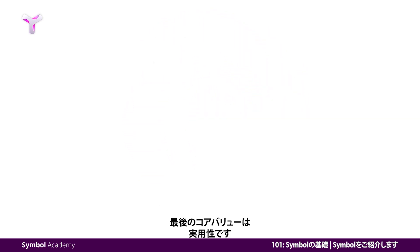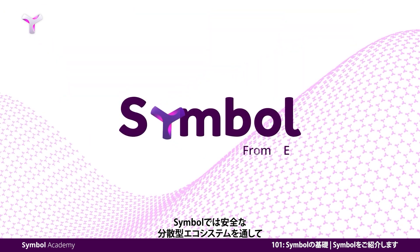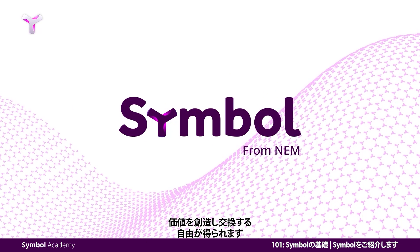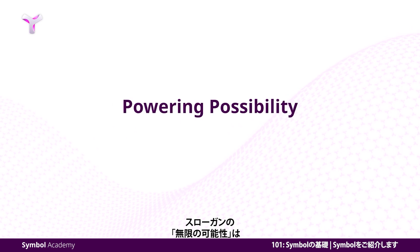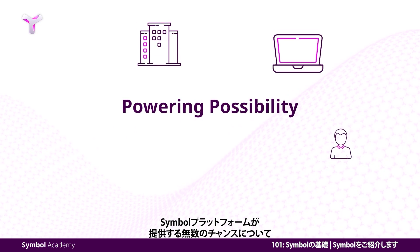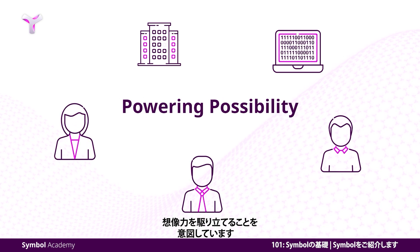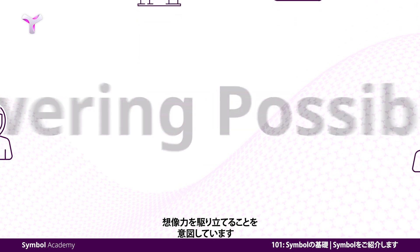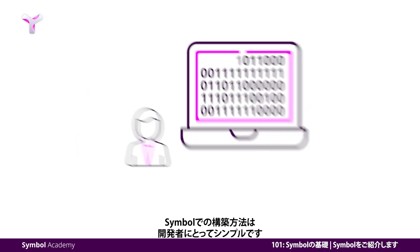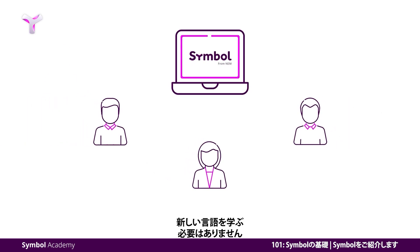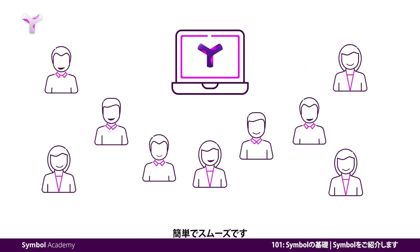Last but not least, the fifth core value is practicality. Symbol gives everyone the freedom to create and exchange value by offering a secure and decentralized ecosystem. Our tagline, Powering Possibilities, is meant to spur the imagination of businesses, developers, ecosystem members, and investors about the vast opportunities that exist within the Symbol platform. For developers, learning to build on Symbol is simple. It is not necessary to learn a new programming language — moving on to be part of the blockchain developer community can be smooth and easy.